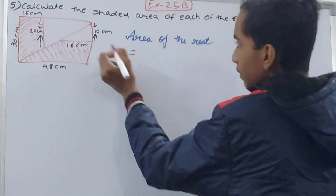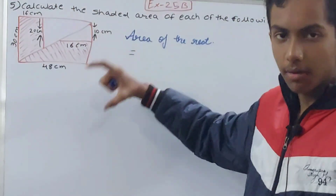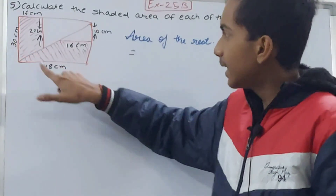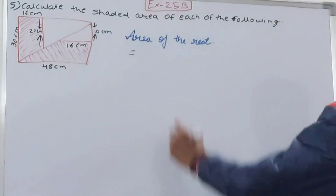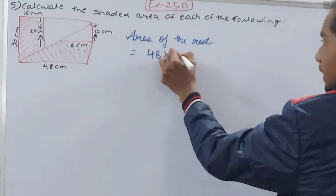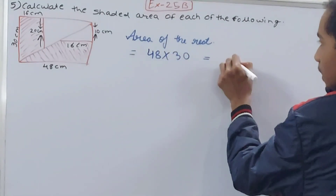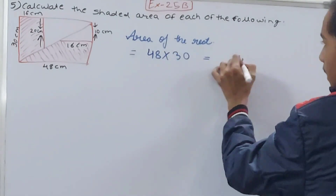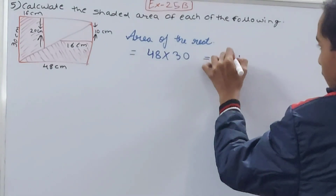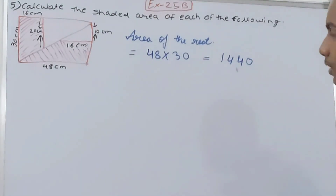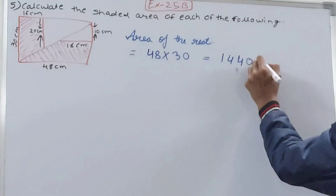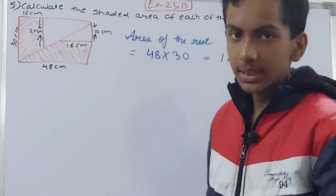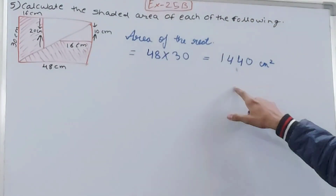We calculate the area of this entire rectangle which contains the two triangles. The length is 48 and the breadth is 30, so 48 into 30. That gives us 1440 square centimeters — this is the area of the rectangle.